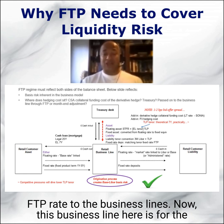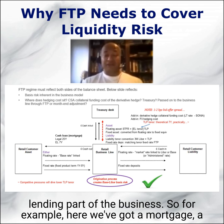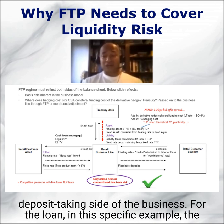This business line here is for the retail business lines. On the left hand side, you've got the customer lending part of the business — for example, here we've got a mortgage, a residential mortgage — and on the right hand side we've got the deposit taking side of the business.